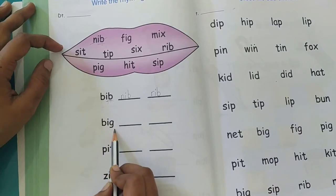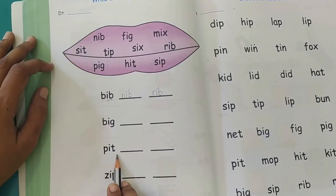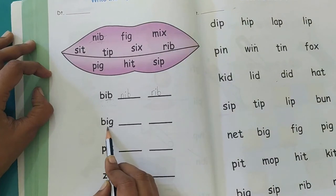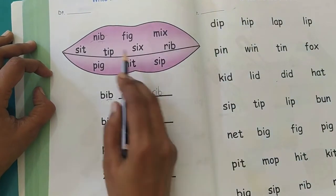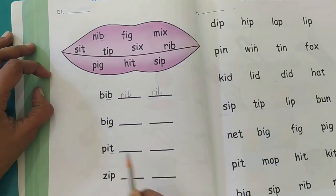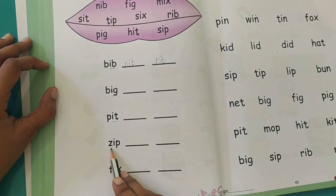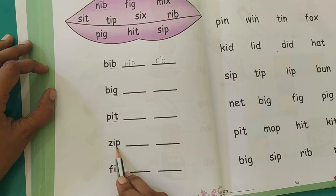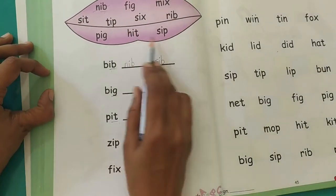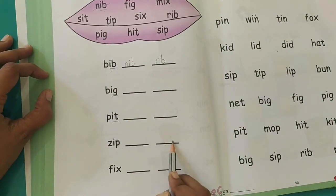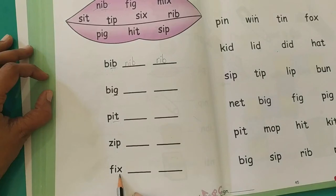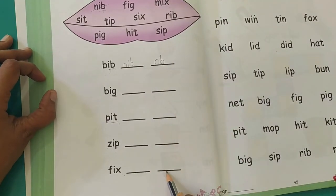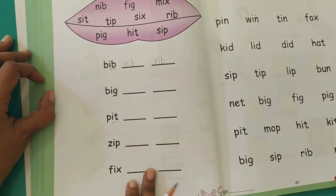Then you will move to the next word. BIG. Now for BIG you have to search for words which are ending with I-G. This is PIT. For PIT you will search words which end with I-T. What is the next word? ZIP. Here you have to search words which are ending with I-P. So which of these words match with ZIP? You have to find two rhyming words and write it down here. For FIX, which words are ending with I-X? You have to search that and write it here. This is how you have to complete the rhyming words worksheet.